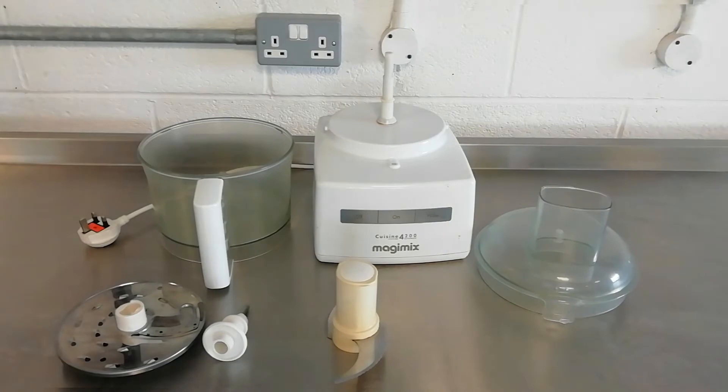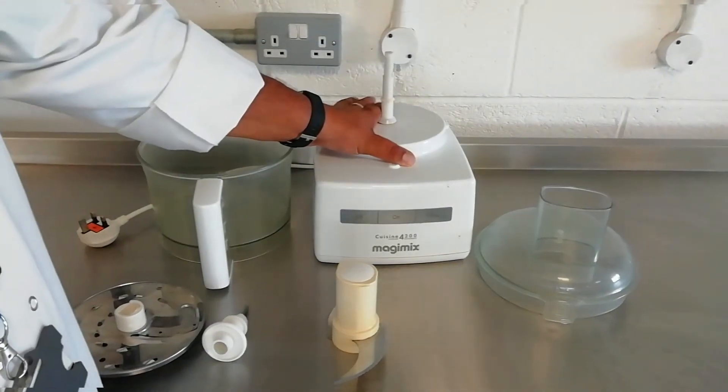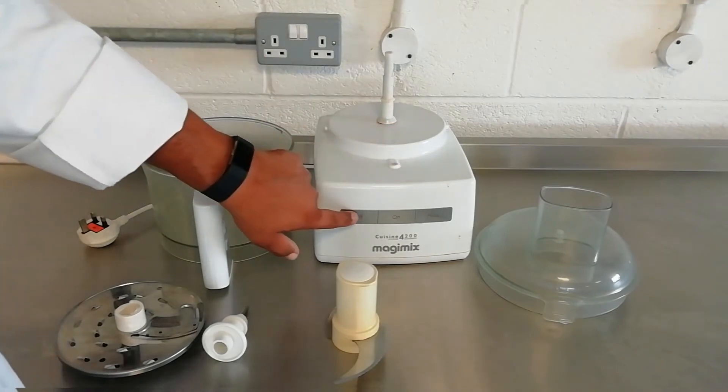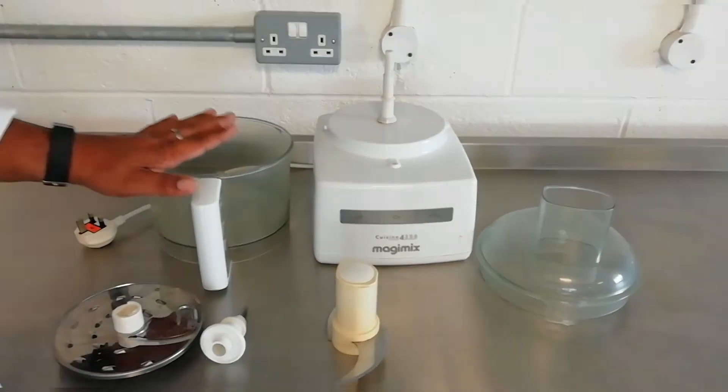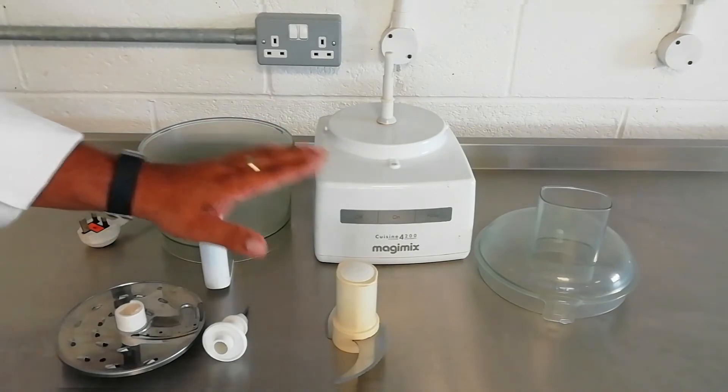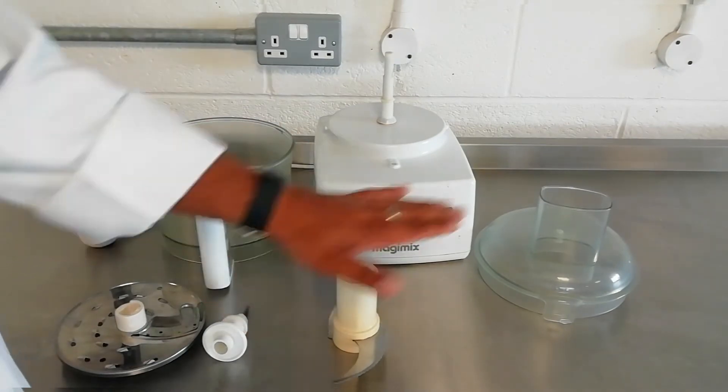Here we have our basic food processor. We have our motor unit. It has an off and on and a pulse button. We have a bowl, our basic blade and our lid.